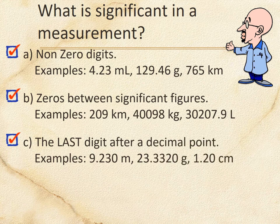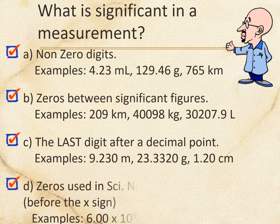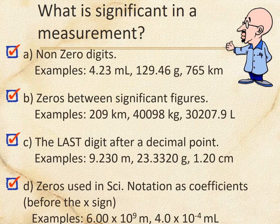The last digit after a decimal is always significant. Zeros after a decimal are significant, but only once you've reached a real non-zero number first. For example, 9.230 is four sig figs because the zero comes after a real number. In scientific notation, zeros after the decimal following a real number count as significant; the '× 10 to some power' part has nothing to do with sig figs. So 6.00 × 10⁹ meters is three sig figs, and 4.0 × 10⁻⁴ milliliters is two sig figs.